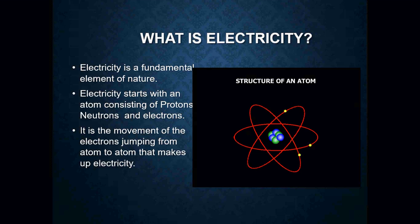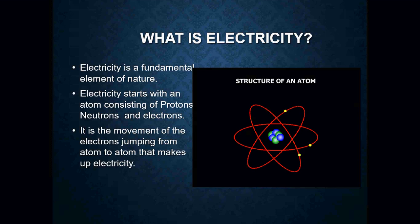We've got to start at the very, very beginning. Electricity really is nothing more than a fundamental element of nature. Electricity has to start with an atom. We're going right back to real basic science. We know that atoms consist of protons, neutrons, and electrons. In regards to electricity and the movement of electricity, it's actually the electrons that are doing all of the work. In an electrical circuit, we have electrons that are going to be jumping from atom to atom, and that is what makes electricity flow through a circuit.